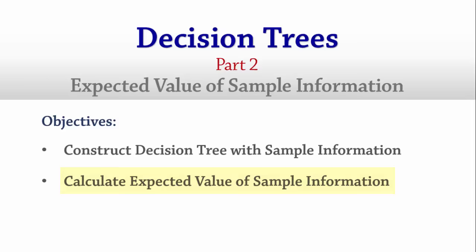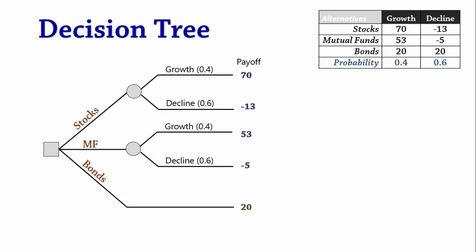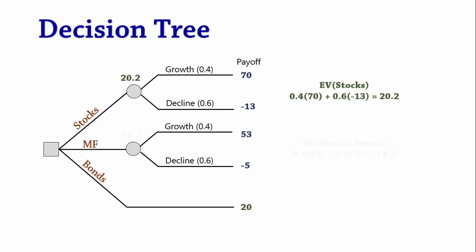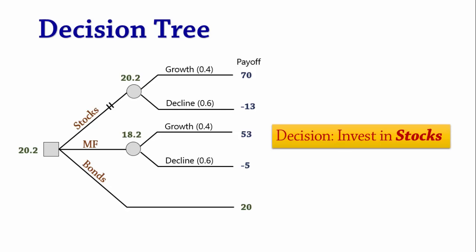We will be using this payoff table where payoffs are profits. This is the decision tree for the payoff table. The expected value for stocks is calculated as 20.2, for mutual funds it is 18.2, and for bonds it is 20. The best of the expected values is 20.2, therefore the decision is to invest in stocks.